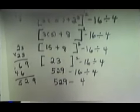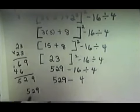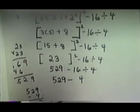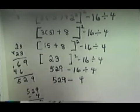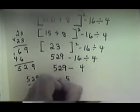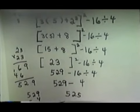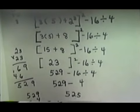Now, you're finally down to the last step, which is 529 minus 4. And that gives us 525. And that would be our answer. That's a lot of work to get down to 525. But you need to go through each step like we've done or you will not get the correct answer.